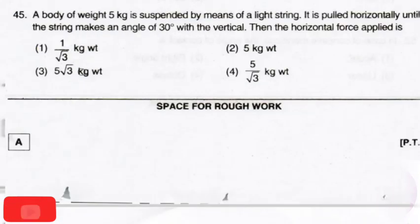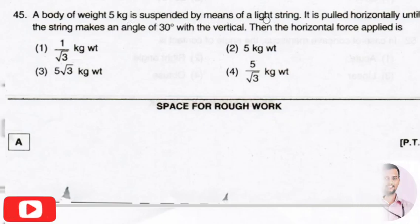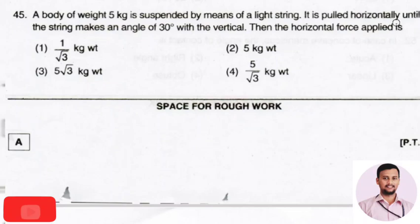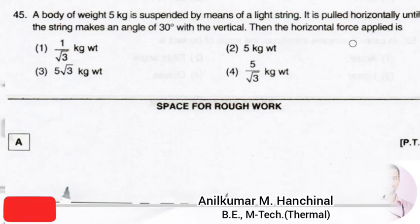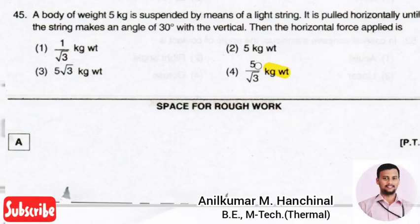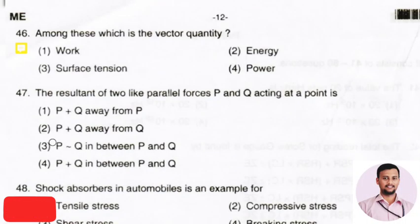The next question: a body of weight 5 kg is suspended by means of a light string. It is pulled horizontally until the string makes an angle of 30° with the vertical. The horizontal force applied is? The right answer is option 4, that is 5/√3 kg·wt.